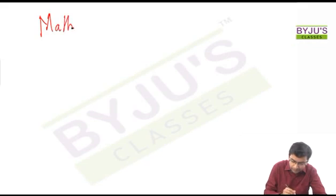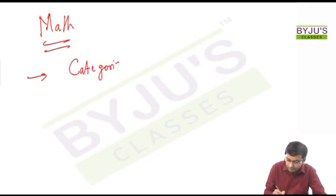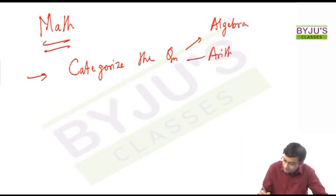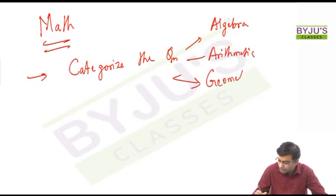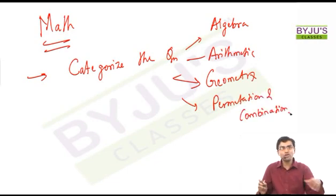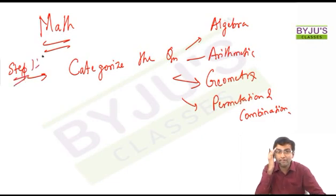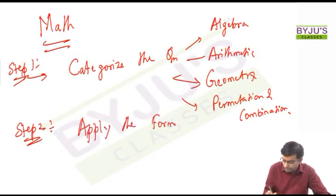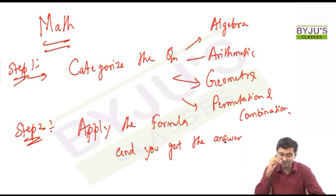If I look at a math question, what do you do? First you categorize the question — you identify whether it is an algebra question, an arithmetic question, a geometry question, or permutation and combination. Before you apply the formula, you need to know what formula to apply, and for that you need to categorize. So step one: categorize the question and identify what category it belongs to — for example, this is an algebra question based on quadratic equations. Step two: apply the formula and get the answer. These are the two steps you follow in any mathematics question. Very similar process we are going to do in RC.